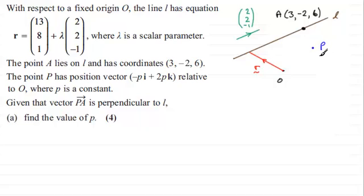So this is the position vector of P. And we'll say then that this is, we'll write it as a column vector, so it's going to be (-p, 0, 2p). There's no j component, so I'll put zero there. And the k component is 2p. And we know that PA is perpendicular to the line l.